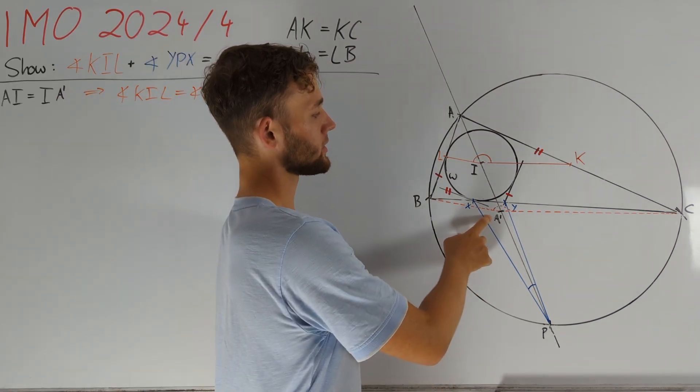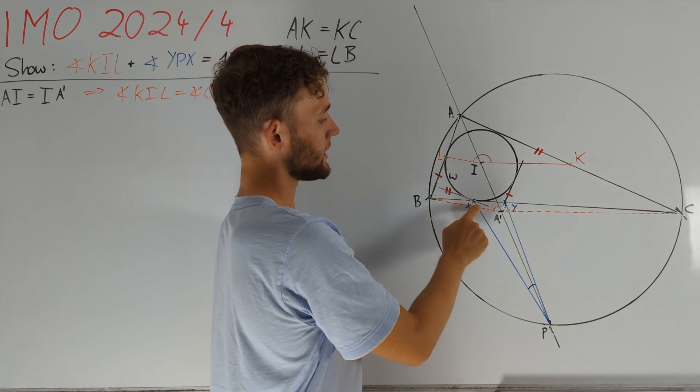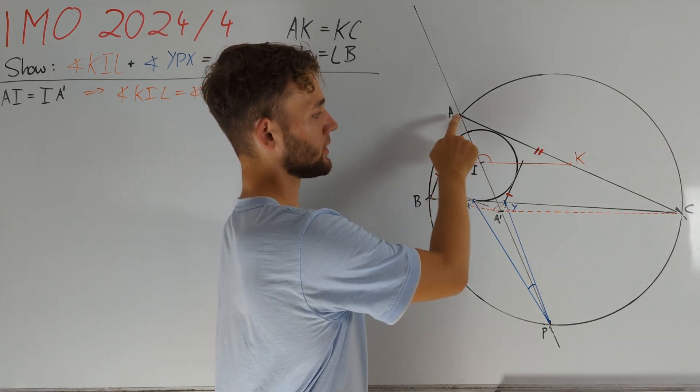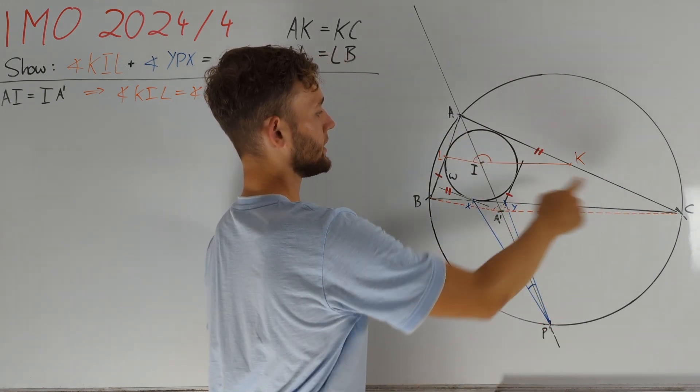Notice that A' is also just the reflection of A at I. Moreover, this line, namely the second tangent of omega that is parallel to AC, is nothing but the reflection of AC at I.